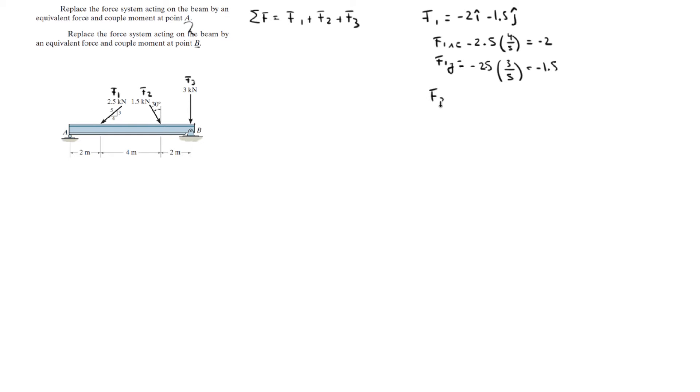So we gotta do the same thing for F2 and F3. F2 has an X component and a Y component. The X component is the magnitude and we're given an angle so it's times the sine of 30 which is equal to 0.75 and the Y component is going down so it's negative the magnitude times the cosine of 30 which equals negative 1.3. So the Cartesian vector form is 0.75i minus 1.3j and F3 just has a Y component so it's negative 3j.